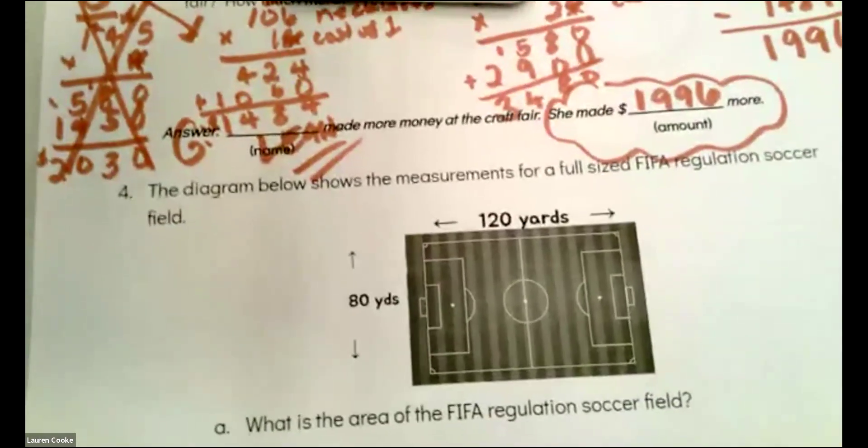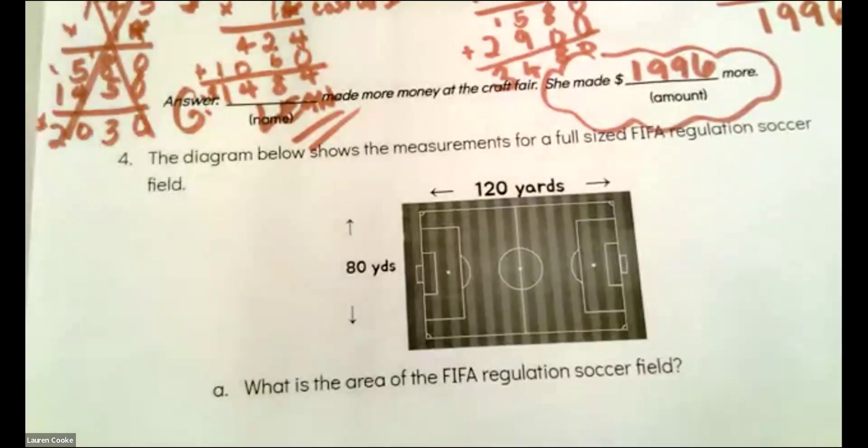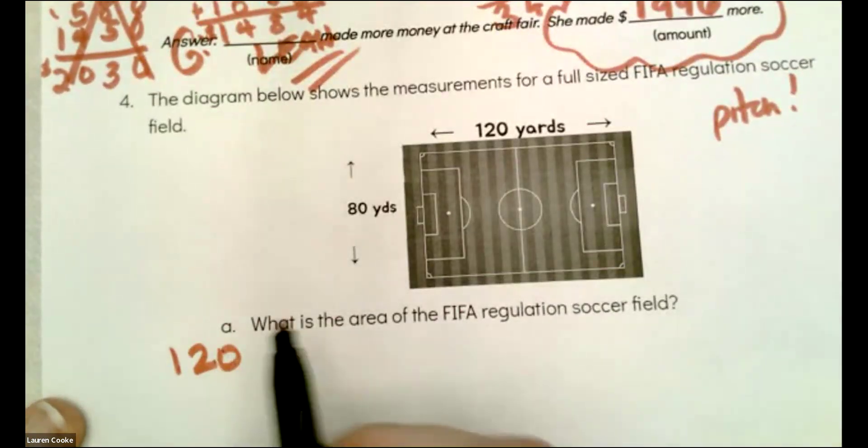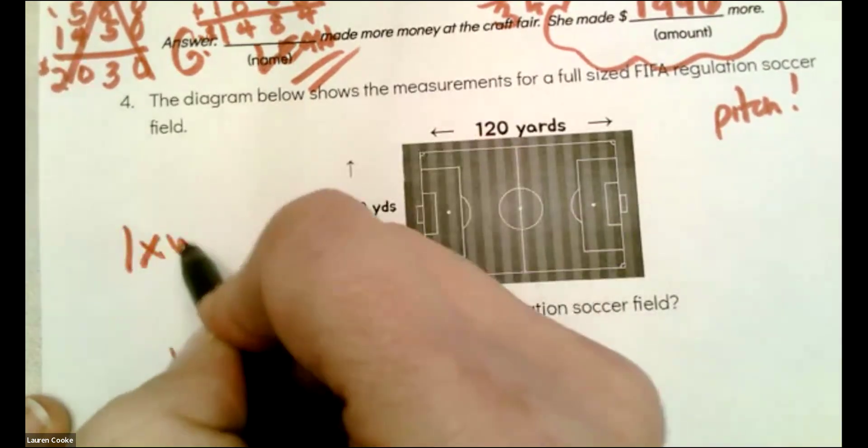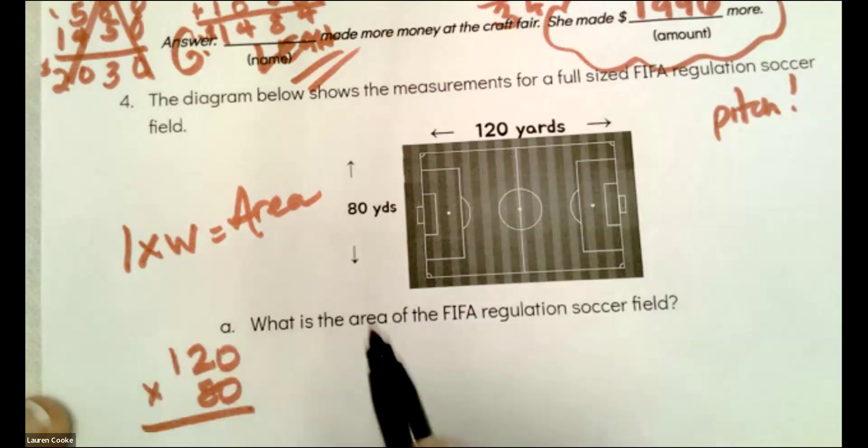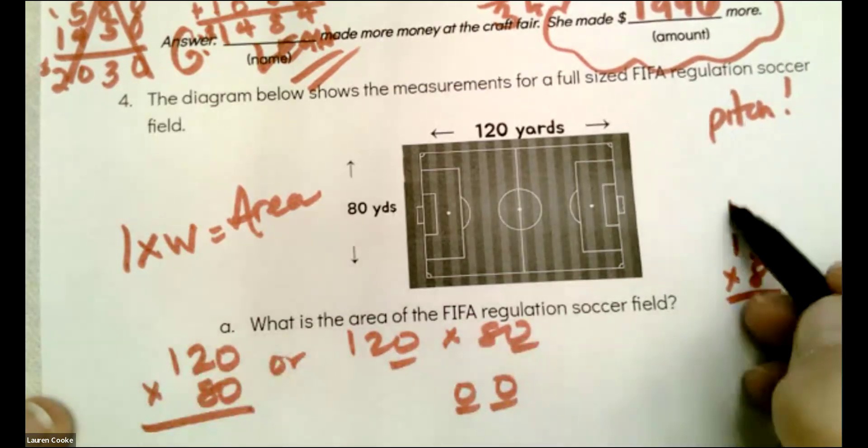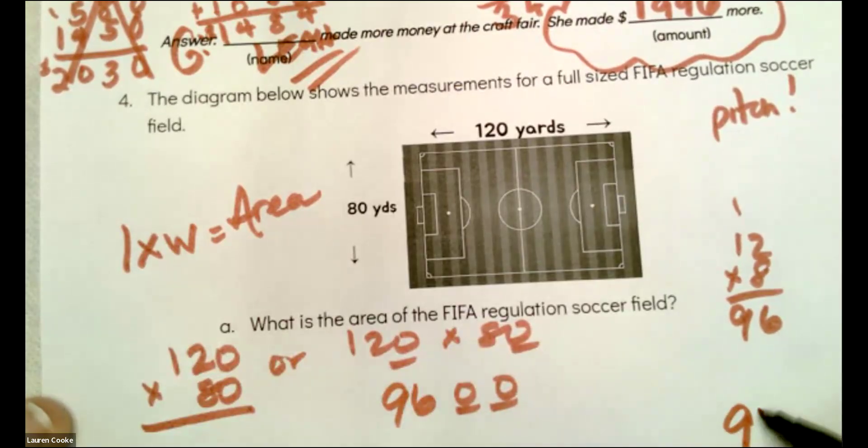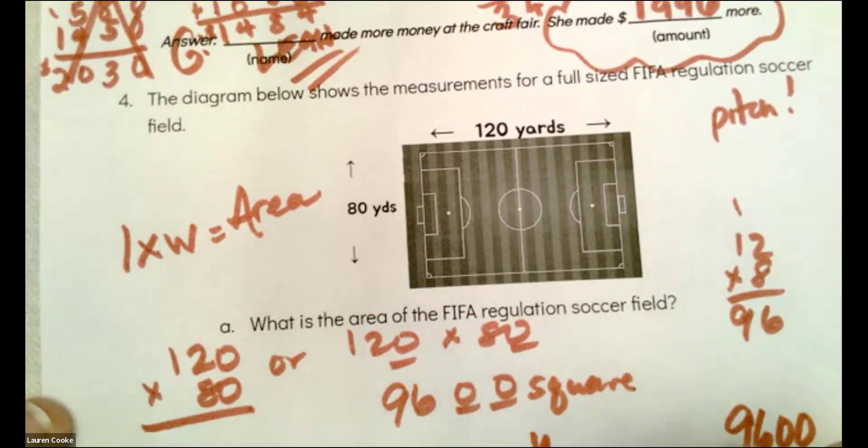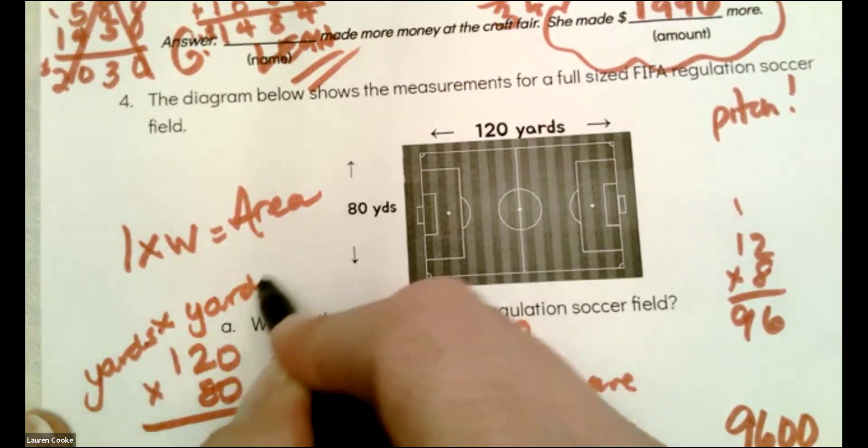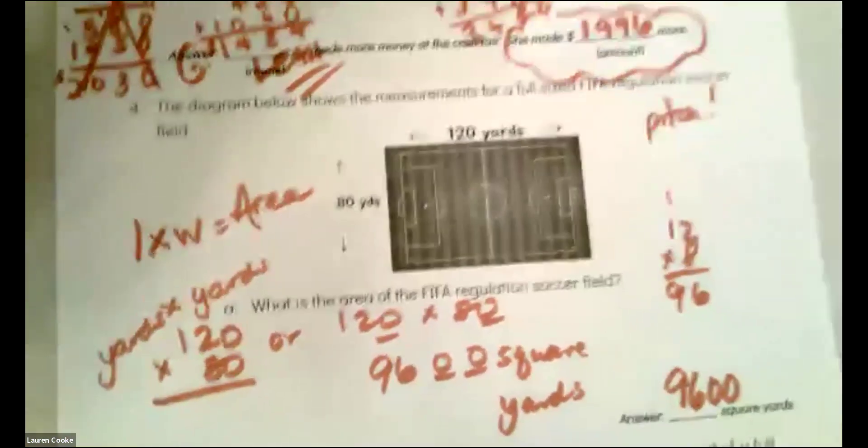The diagram below shows the measurements for full side FIFA regulation soccer fields, or as they say in England, the pitch. What's the area of this? Awesome. Okay. I love this. 120 times 80 because length times width is area every day and twice on Sundays. But I'm going to look at it like this. 120 times 80. And I have my two zeros. And then I know 12 times 8. So I don't always have to do standard algorithm here. So it's 9,600 square yards because this is yards times yards. Yards times yards. I hope that you got that on your own. It's good stuff.